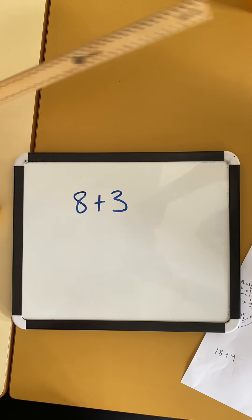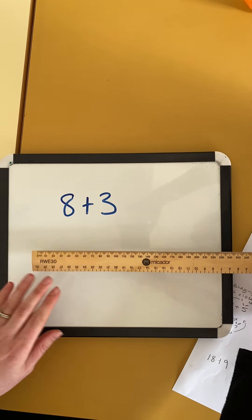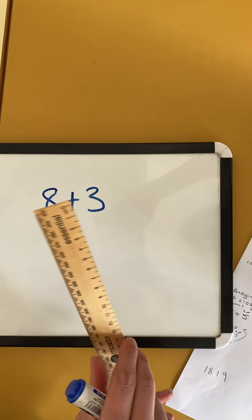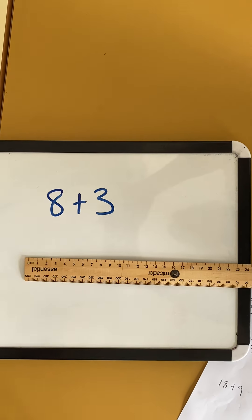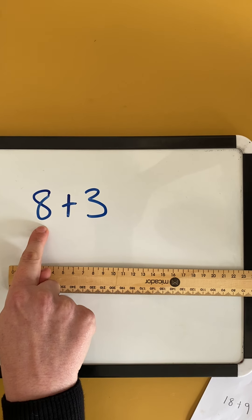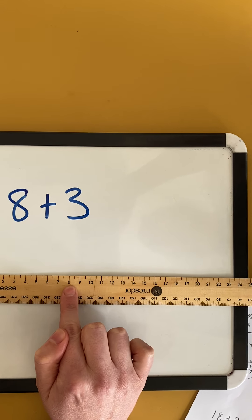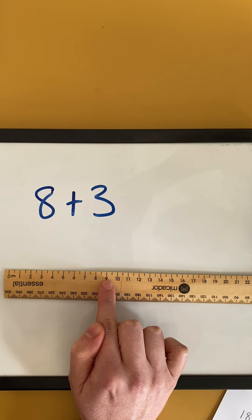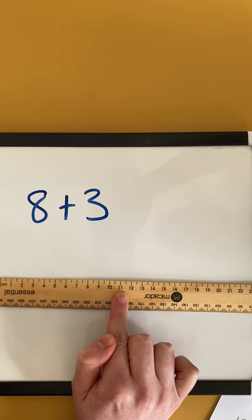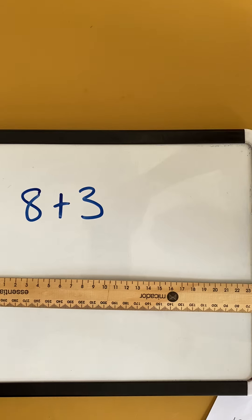So if I was going to do 8 plus 3 with the counting on strategy, I could use my ruler. Here we go. I'm going to find my biggest number, 8, and it's just here and I'm going to count on 3 more. 1, 2, 3. So I know my answer would be 11.